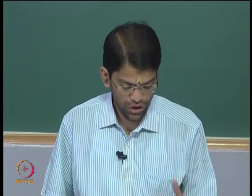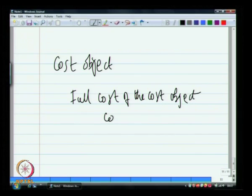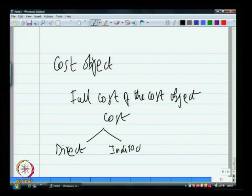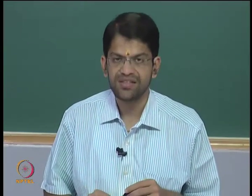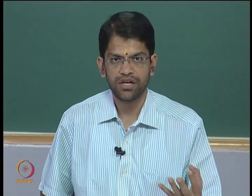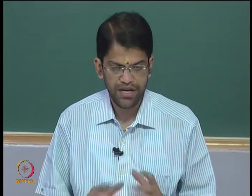To do that, we need to understand that cost is divided into two broad categories: direct cost and indirect cost. The direct cost of a cost object are all items of cost that can be specifically identified and tagged as caused by this cost object. For example, the fabric or denim used in manufacturing a batch of jeans is a direct cost of that batch of jeans.